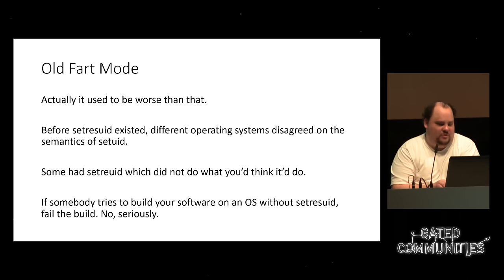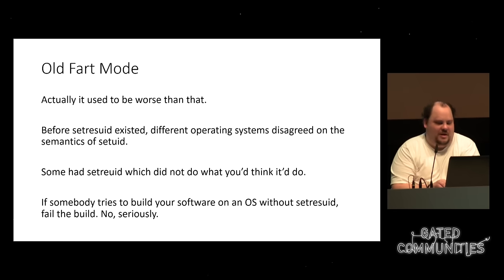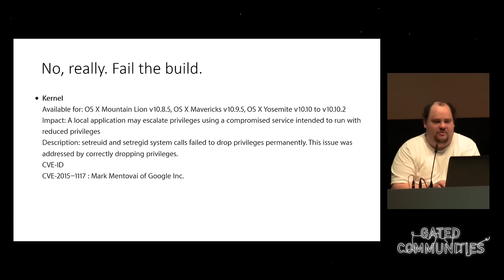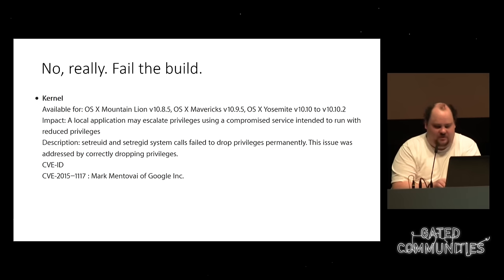It used to be even worse: setreUID looks like it does the right thing but doesn't. In many programs today you find backwards compatibility code for when setresUID is not found by configure, and in many cases that code path is pretty bad. My advice: if someone tries to build your program on a system that doesn't have setresUID, just fail the build — we need to get this everywhere. As an example, there was an Apple security advisory where the setreGID syscall failed to drop privileges. Test it actually works and check all return values.